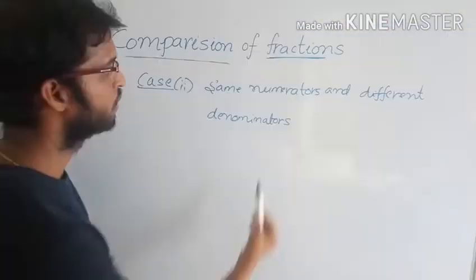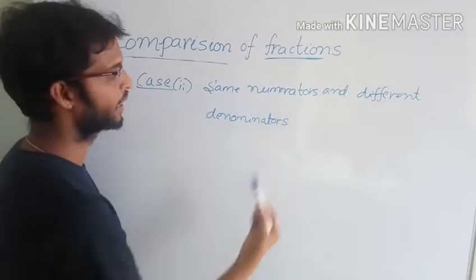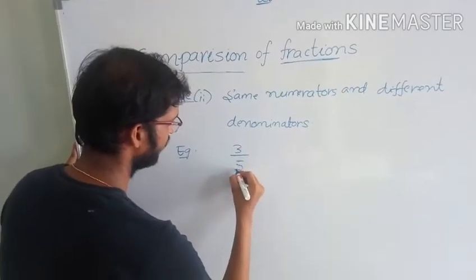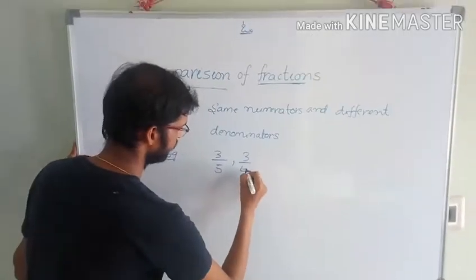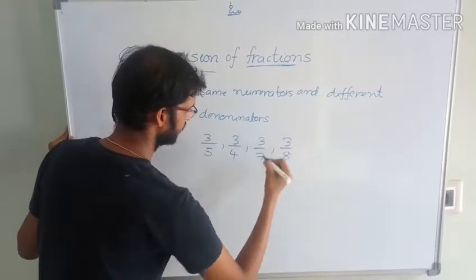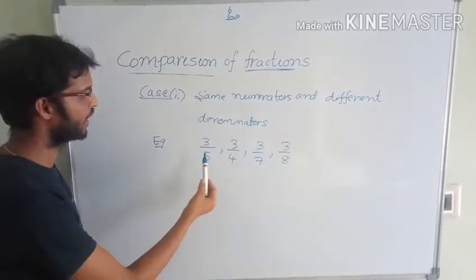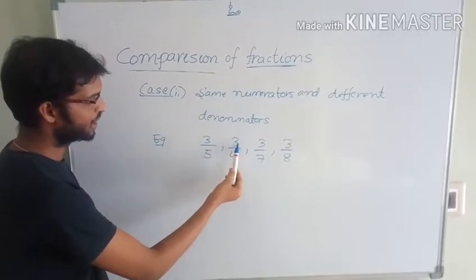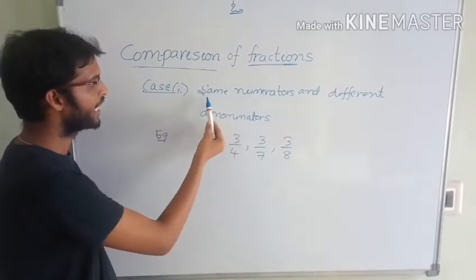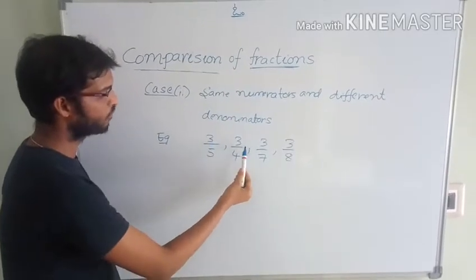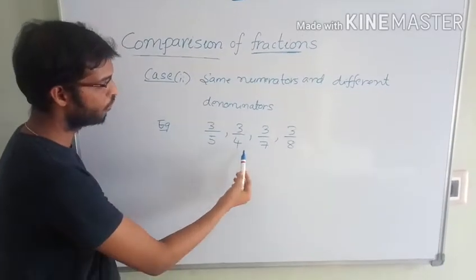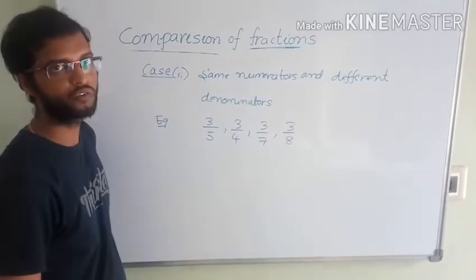In Case 2: same numerators and different denominators. For example, 3 by 5, 3 by 4, 3 by 7, 3 by 8. Observe — all four fractions have numerator 3, but the denominators are 5, 4, 7, 8, which are different.